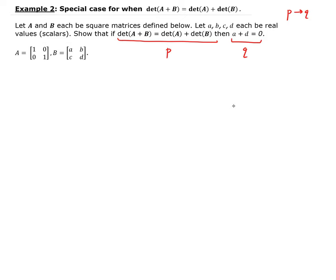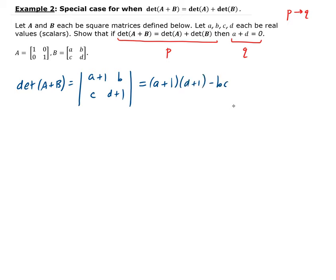So we need to assume P, work with some of the matrix algebra, and then come up with our conclusion Q. Let's start to calculate the determinant of A plus B. Adding A and B gives us a matrix with entries A plus 1, B, C, and D plus 1. The determinant is just A plus 1 times D plus 1 minus BC. Expanding this gives us AD plus A plus D plus 1 minus BC.